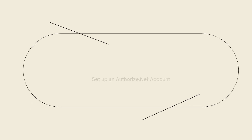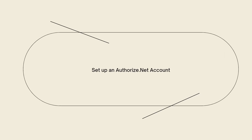First of all, set up an Authorize.net account. If you haven't already, sign up for an account at Authorize.net, provide the necessary information, and complete the registration process to obtain your API credentials.